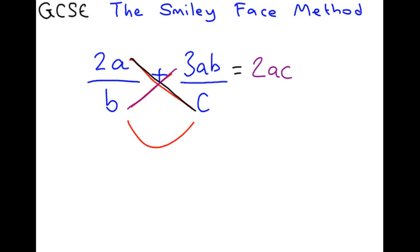b times 3ab, 3ab squared. b times c, bc. It was an addition. So, we put an add there.